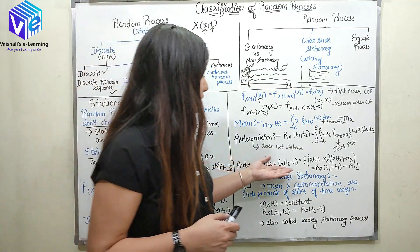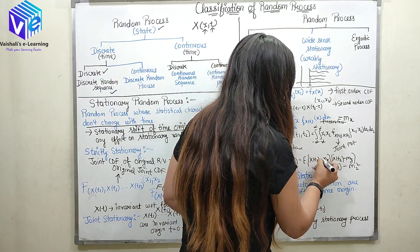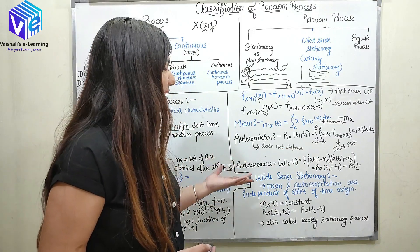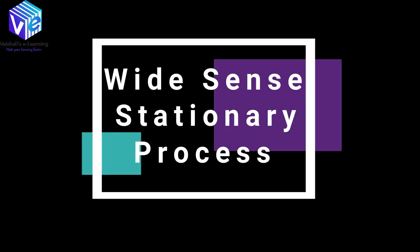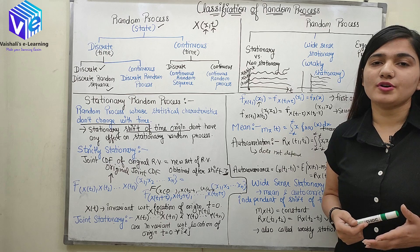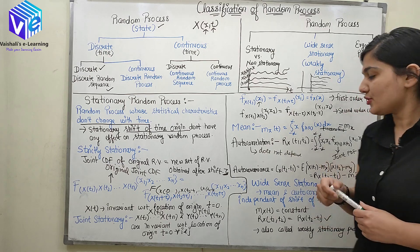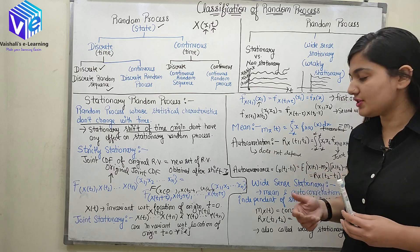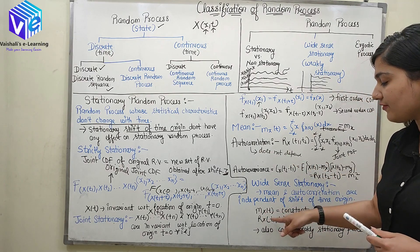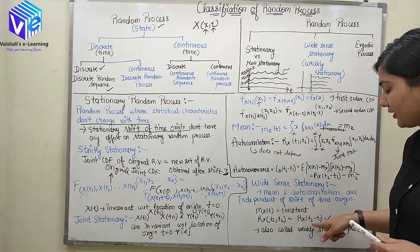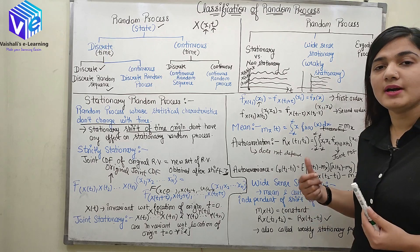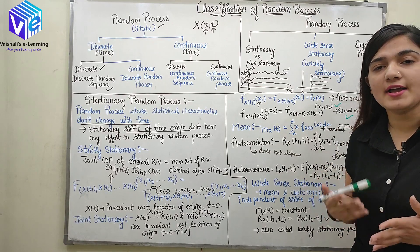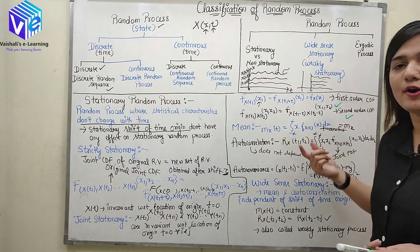For the wide sense stationary (weakly stationary) process, the conditions are that the mean is constant and the autocorrelation function R_x(t1, t2) = R_x(t2 − t1) — that is, autocorrelation depends only on the time difference, not on individual time values. However, these conditions are only valid for first and second order systems; they are not valid for higher order systems.